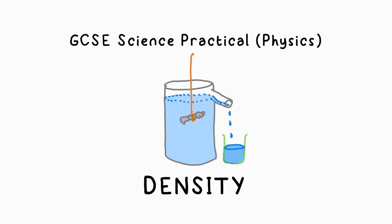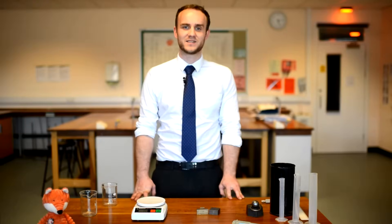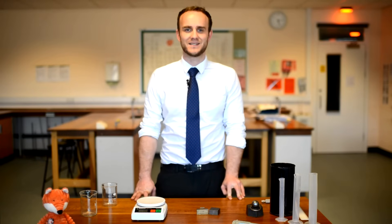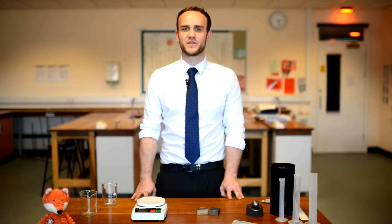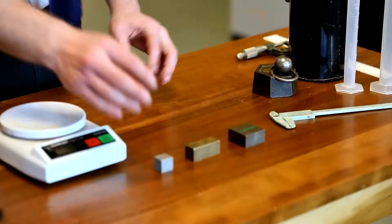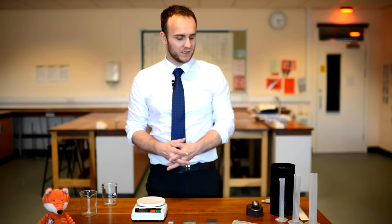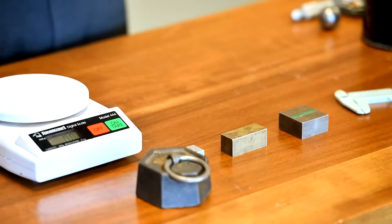I'm here to show you how to do the GCSE required practical on density. We're going to be finding the density of three different types of objects today: regular objects — that is objects you can measure the dimensions of and then calculate their volume, that is the space that they take up — irregular objects, and also liquids.